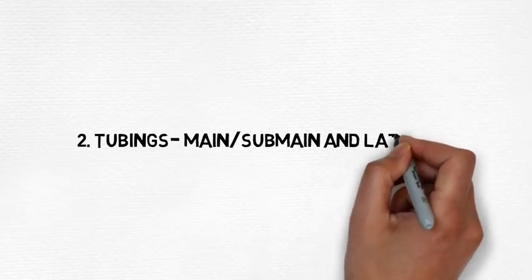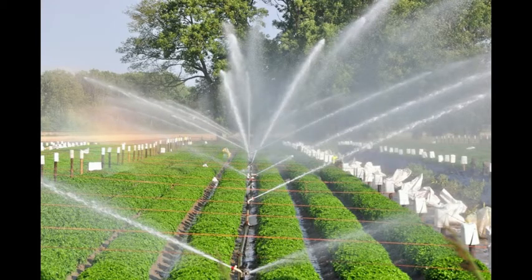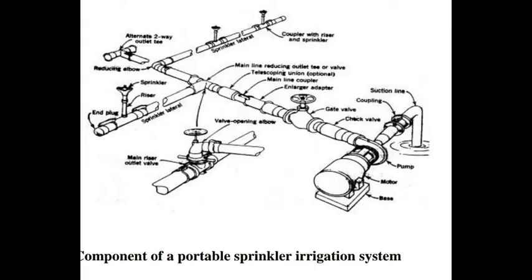Tubings — Main, Submain, and Lateral. The tubings consist of a main line, sub mains, and laterals. The main line conveys water from the source and distributes it into the sub mains. The sub mains convey water to the laterals, which in turn supply water to the sprinklers. Aluminium or PVC pipes are generally used for portable systems, while steel pipes are usually used for center pivot laterals.